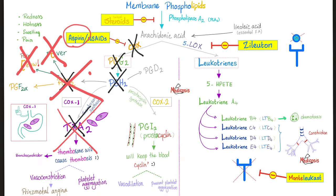You can learn more about aspirin and the non-steroidal anti-inflammatory drugs in my pharmacology playlist. Lipoxygenase enzyme is inhibited by zileuton, whereas the leukotriene receptor is antagonized by montelukast. And I've talked about them in my pulmonology playlist as well as in my pharmacology playlist.